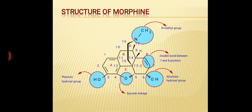Now we talk about the structure of morphine. As you are seeing on the screen, there are some highlighted structural components. The first one is a phenolic hydroxyl group which is present at position 3 and attached to aromatic ring A. The next one is an epoxide linkage present between positions 4 and 5. There is an alcoholic hydroxyl group at position 6, a double bond between positions 7 and 8, and a methyl group at position 17 attached to the nitrogen atom, which is a tertiary amine group.